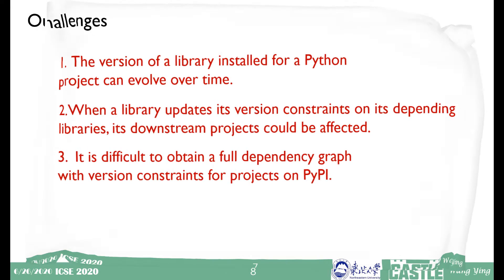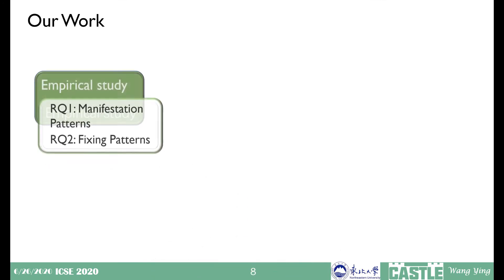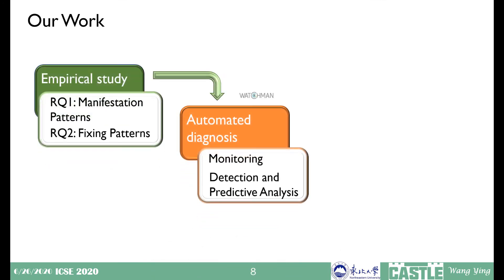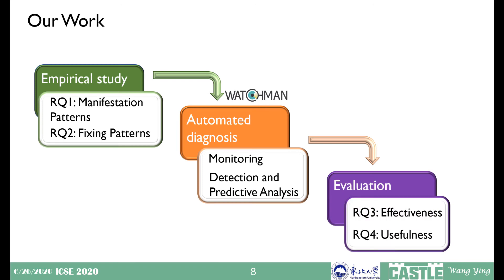To address these three challenges and help developers combat dependency conflict issues, in our work we first conducted an empirical study to understand the characteristics of DC issues. The distilled common patterns enable automatic diagnosis. We also investigated how developers fix dependency conflicts in their Python projects and summarized common fixing strategies. We then propose a technique, Watchman, which can perform a holistic analysis from the perspective of the entire Python ecosystem to continuously monitor and detect dependency conflicts caused by daily library updates.